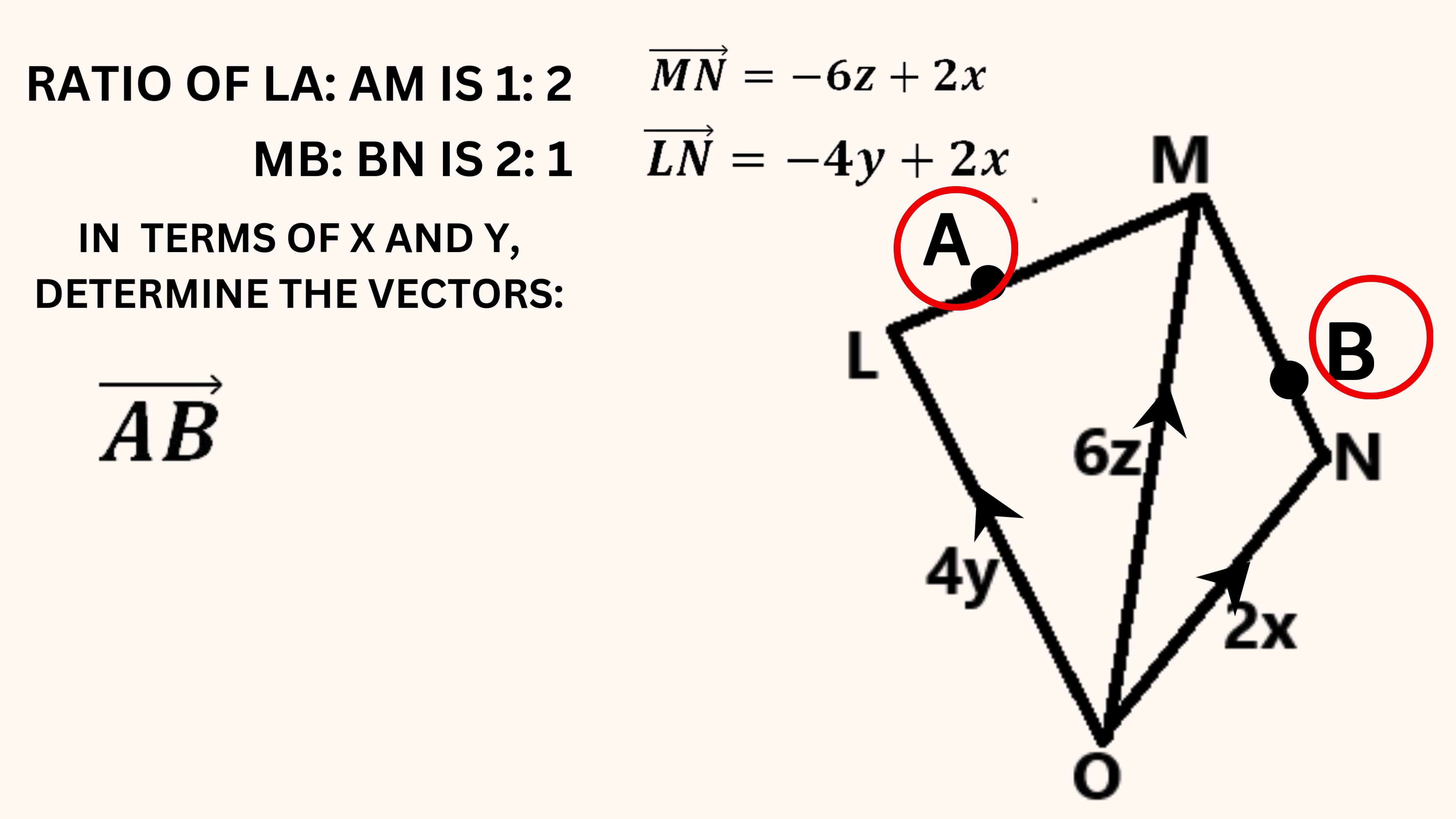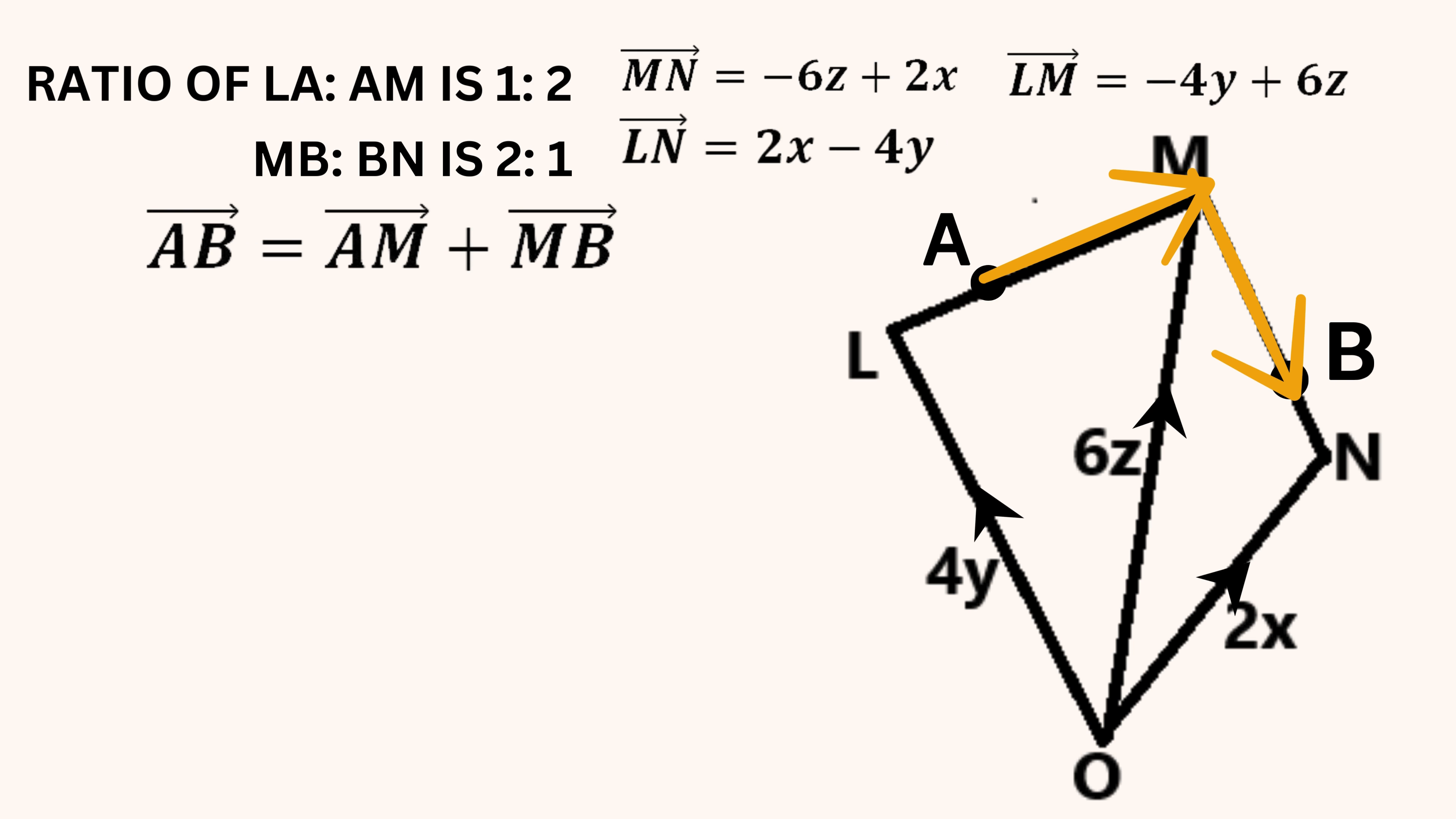The third and final vector that we were asked to find was the vector AB. To get from point A to point B, we can go from point A to point M and then from point M to point B. So vector AB is equal to vector AM plus MB. The question gave us the ratio of the lengths LA to AM as 1 to 2. Add the ratios, we get 3, which means that AM is two-thirds of the length of the whole line, LM. Based on the ratio given for the lengths MB to BN, MB is two-thirds the length of the line MN. So vector AB is two-thirds LM plus two-thirds MN. We can easily factorise two-thirds from each term.